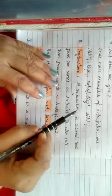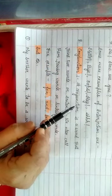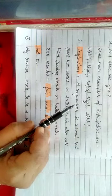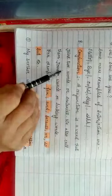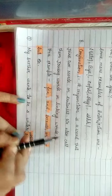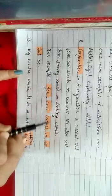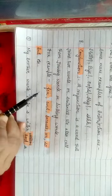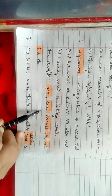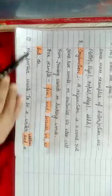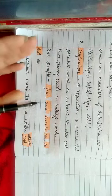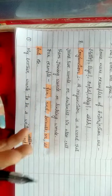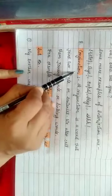Today's last part of speech is conjunction. Conjunctions ko hum linking words bhi bolte hain. A conjunction is a word that joins two words or sentences. Do shabdon ko ya do vakyon ko aapas mein jodne wala shabd. We can also call them joining words. Some examples are: for, and, because, or, so, but. These words join two words or sentences together.